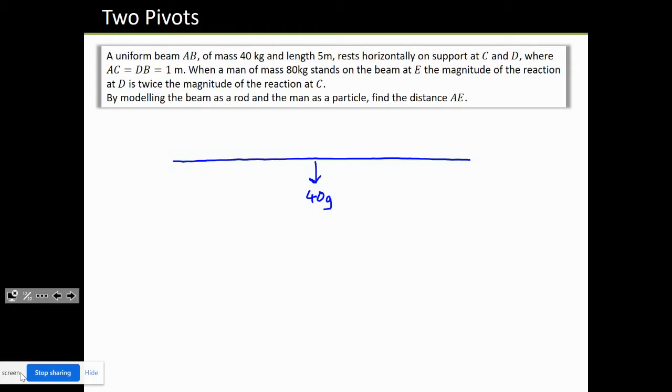It rests on two supports where AC, so if this is AB, that's our rod, AC is 1 meter, so this point here C, that's 1 meter, and DB, so our pivot D here, is going to be 1 meter.